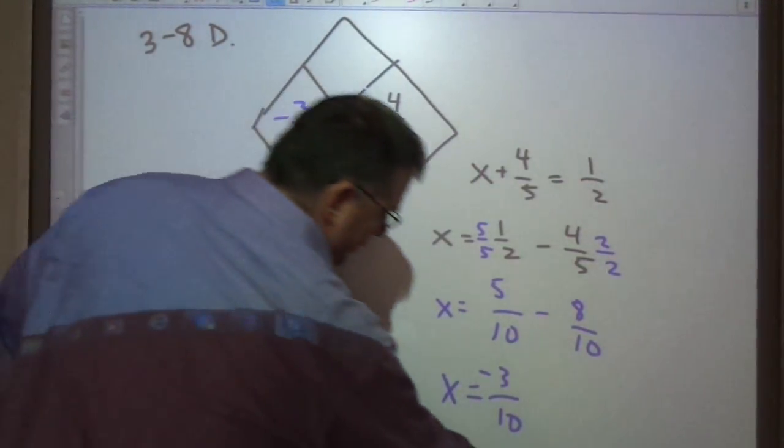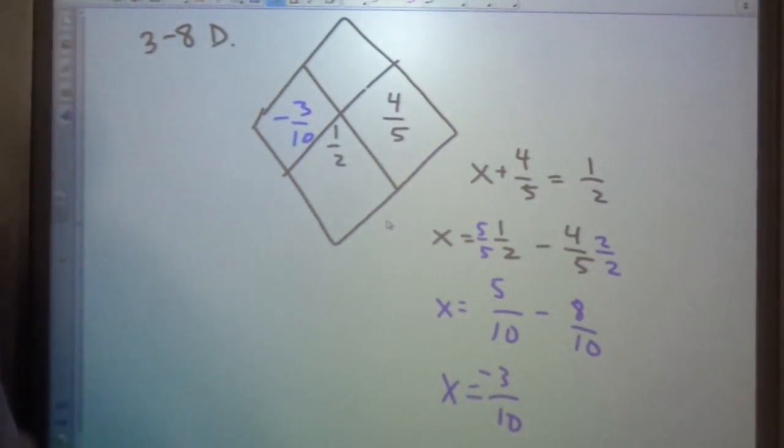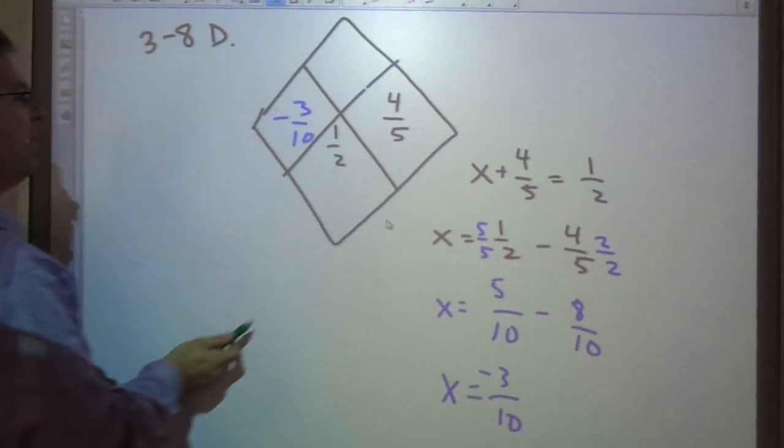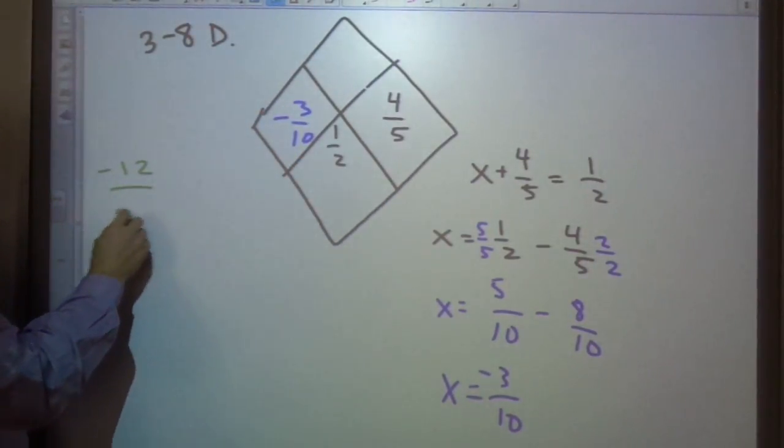Now the final part is, what do I get if I multiply those? Well when you're multiplying you just take the tops times tops and bottoms times the bottoms. So 3 times 4 is 12. 5 times 10 is 50.